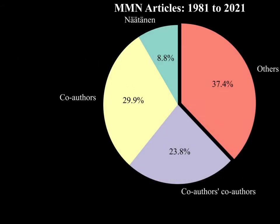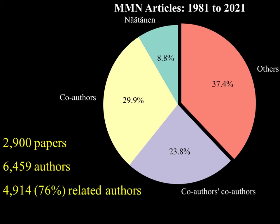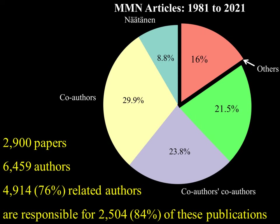This pie chart represents the literature about MMN published between 1981 and 2021, with different segments corresponding to authorship. Naatanen published 8.8% of the literature, while his co-authors published 29.9% and their co-authors published a further 23.8%. Extending this analysis across 2,900 papers and 6,459 total authors, over 4,900 were found to be related to Naatanen through co-authoring relationships, and in total this group was responsible for over 80% of the published literature in this field.